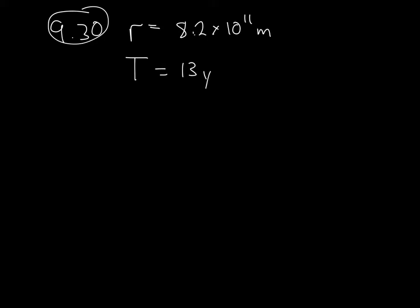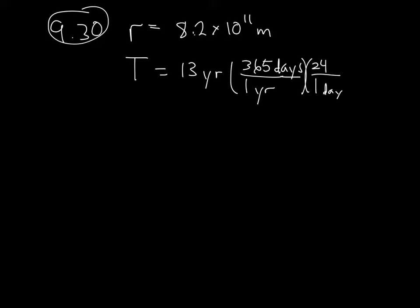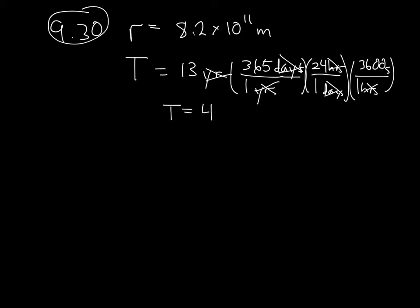I'll convert the period into SI units right away. One year is 365 days, one day is 24 hours, and one hour is 3,600 seconds. Years cancel with years, days with days, and hours with hours, giving a period equal to 4.1 times 10 to the 8 seconds.